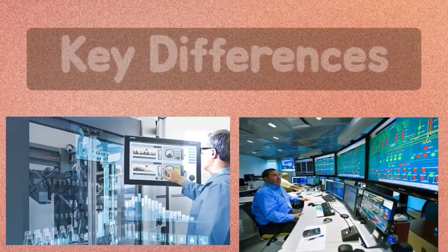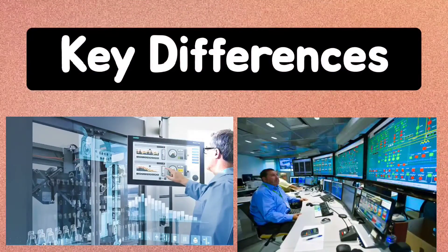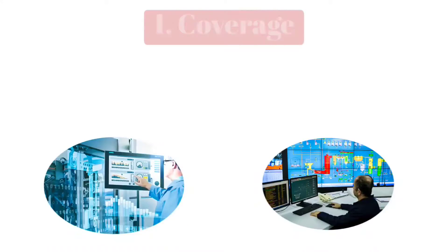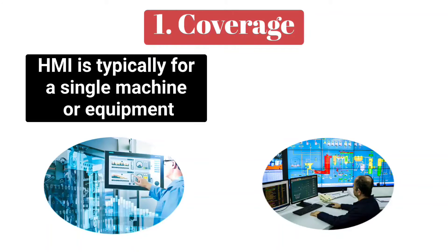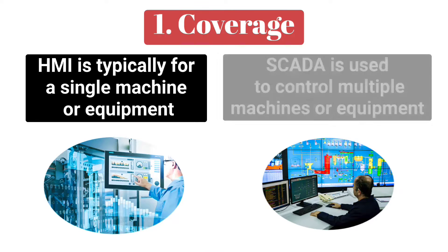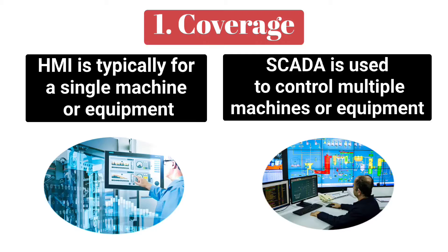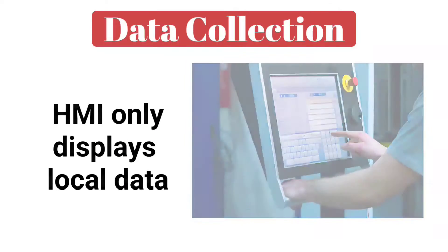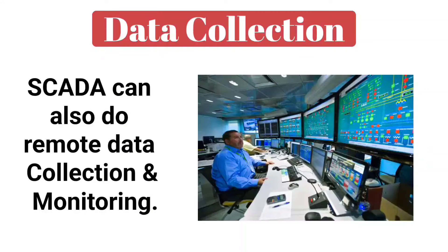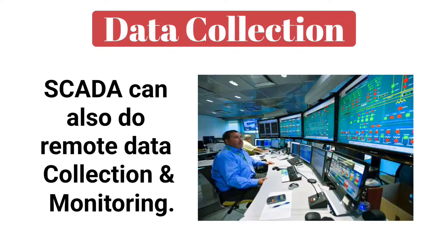Now let's discuss some key differences. First is coverage: HMI is typically for a single machine or equipment, while SCADA is used to control multiple machines or equipment. The next difference is data collection: HMI only displays local data, whereas SCADA can also do remote data collection and monitoring.